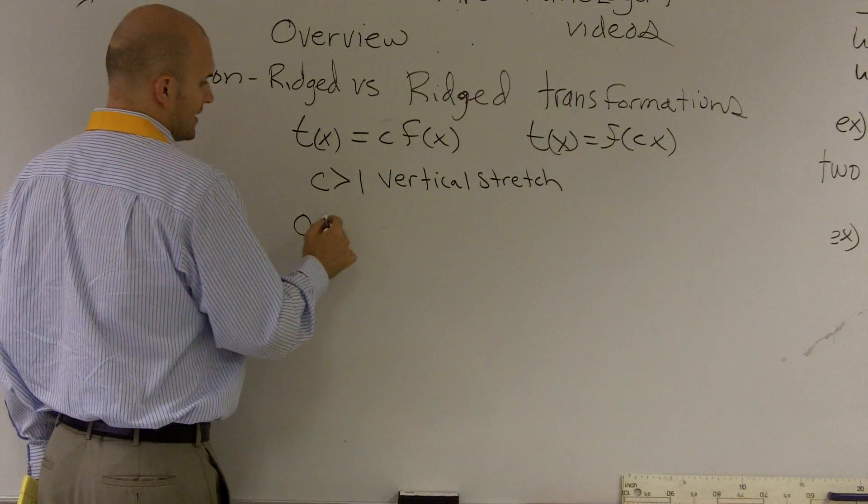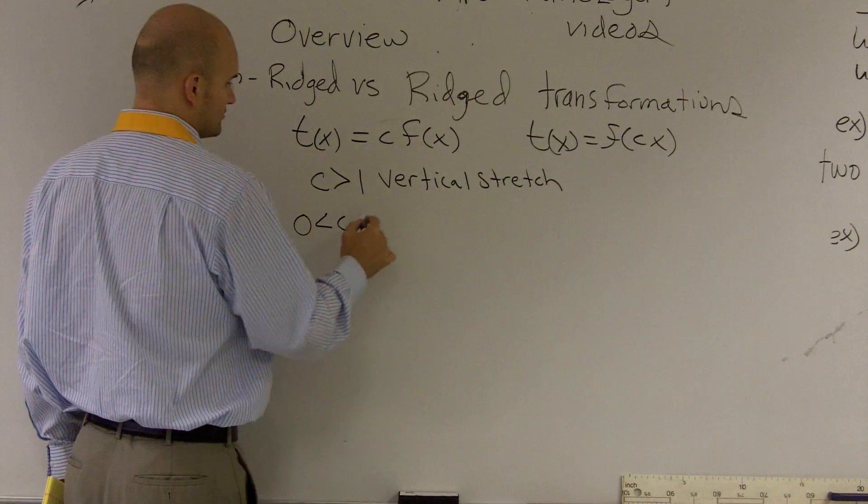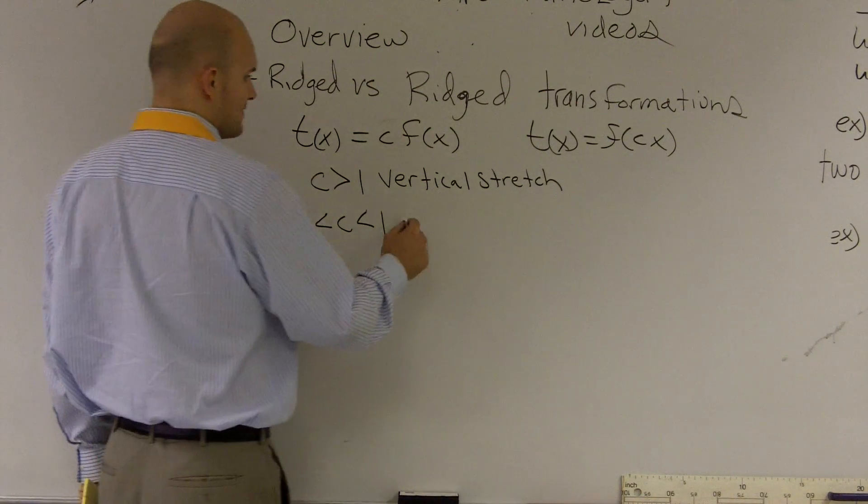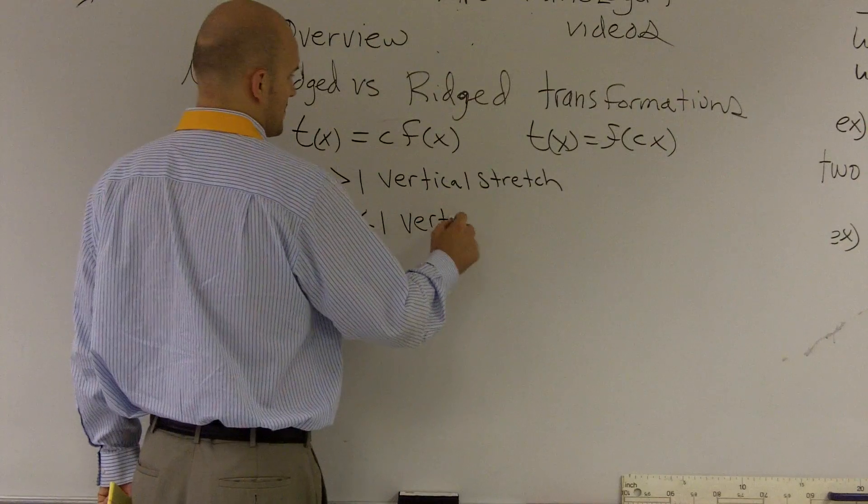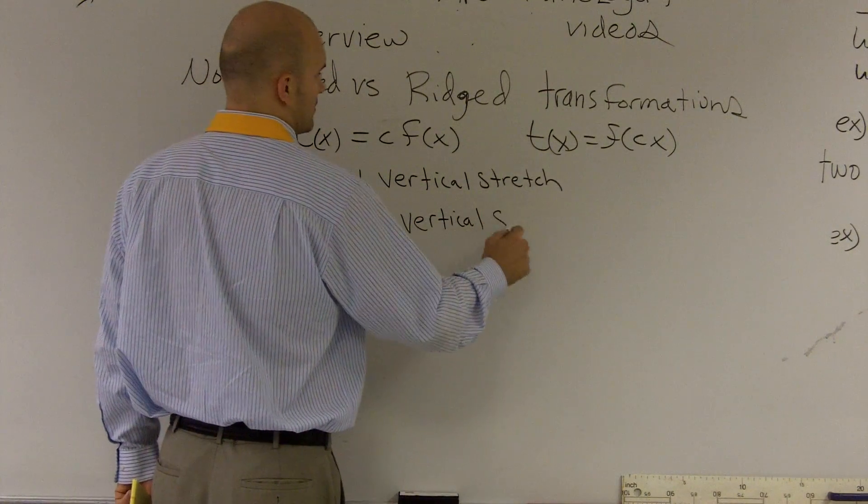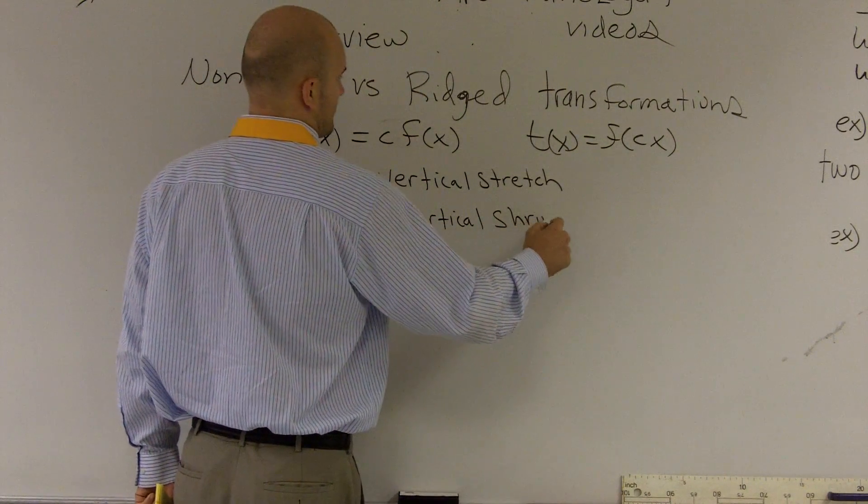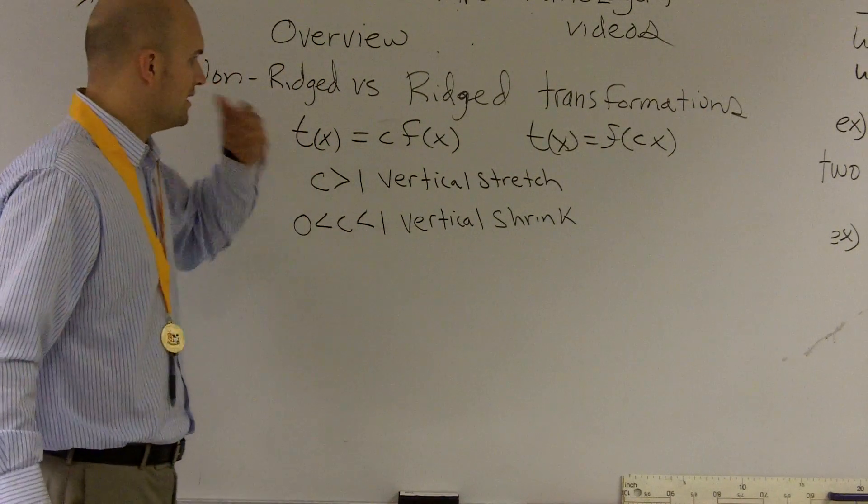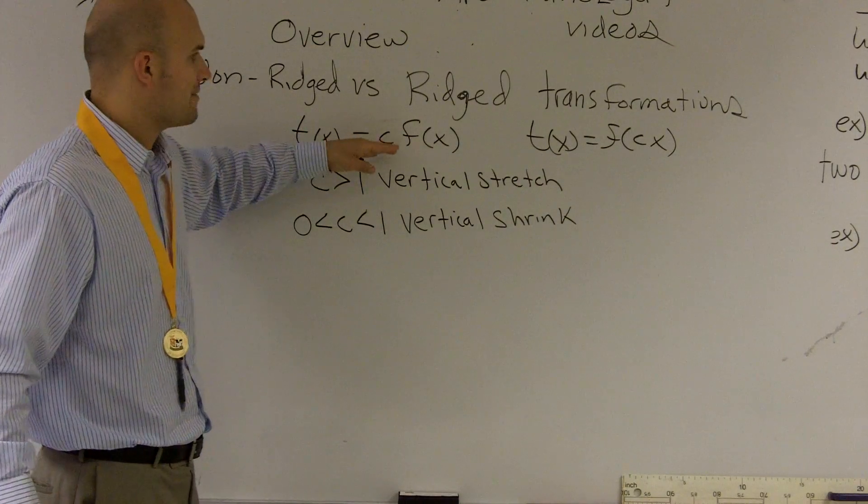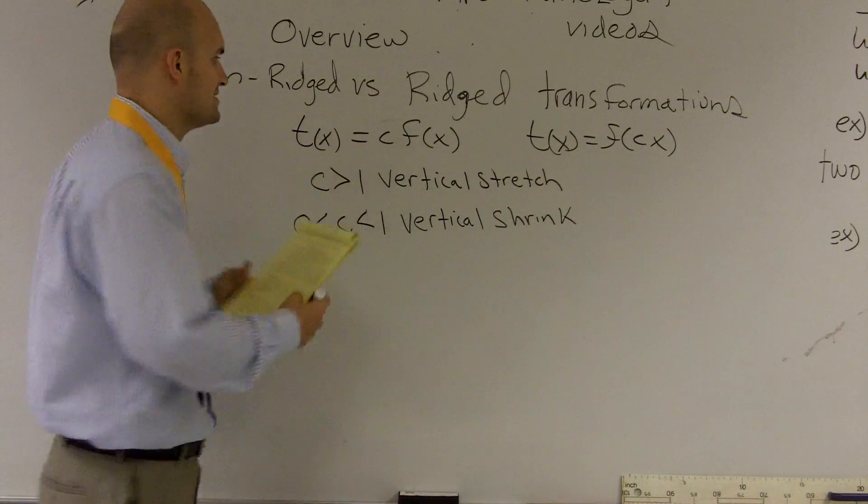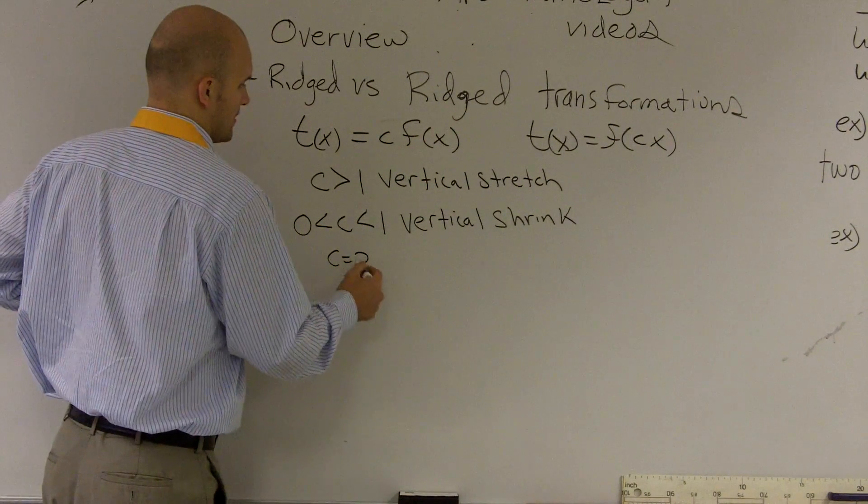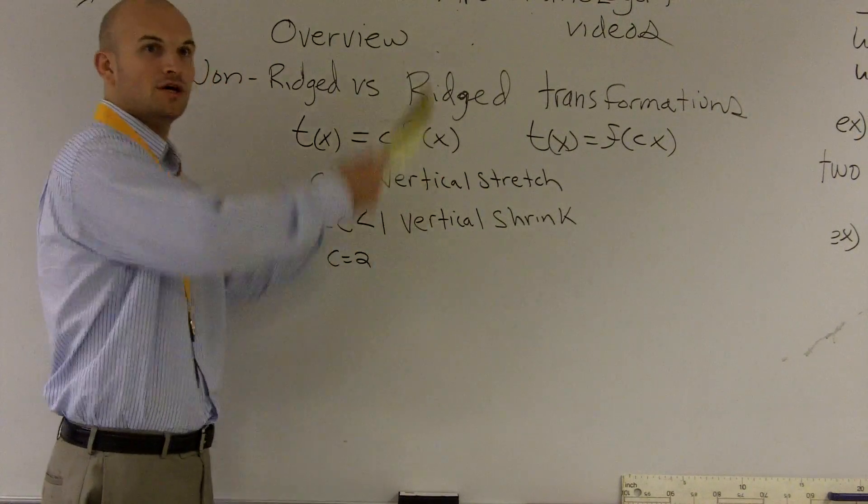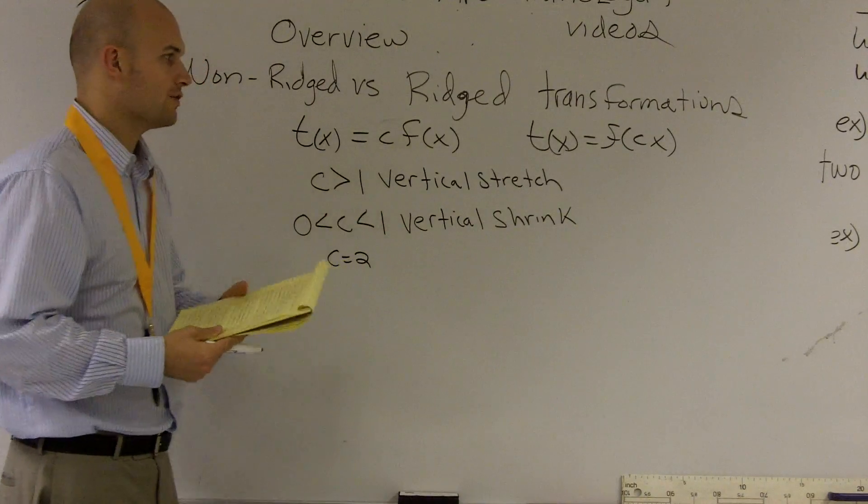When c is greater than 0 but less than 1, I'm going to have a vertical shrink. And what you guys can think of, if you just look back at the ordered pairs of this, obviously I'm affecting, let's say my c was equal to 2. Well now, all my y values are being multiplied by 2, so you can see how that's going to stretch up your y coordinates.